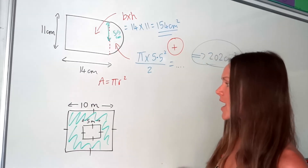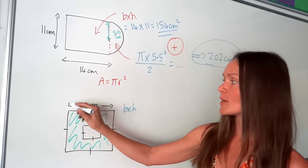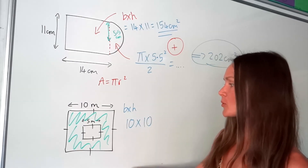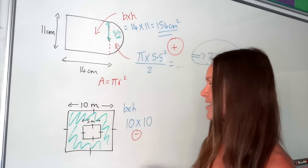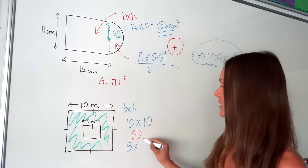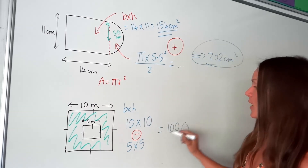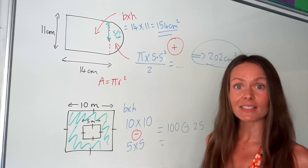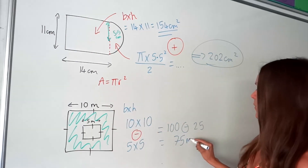So to work out the area of that big square, it's just base times height, so we're doing 10 multiplied by 10. But then we need to subtract that small square — base times height again — which is 5 multiplied by 5. So 10 times 10 is 100, and 5 times 5 is 25, and 100 take away 25 is 75. So the answer is 75 metres squared for the last one.